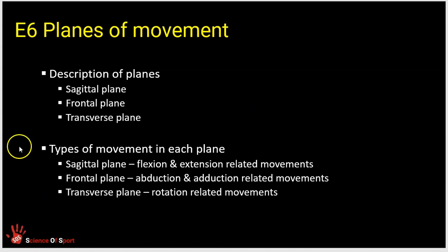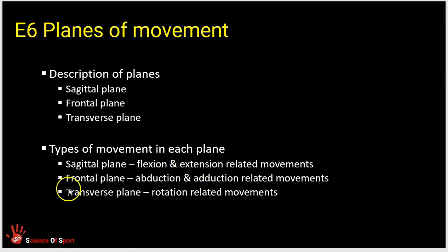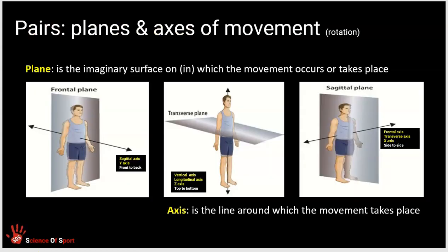Certain types of movement actually happen in certain planes. Within the sagittal plane we have flexion and extension related movements. The frontal plane is abduction and adduction. The transverse plane is rotational movements. A plane is an imaginary surface on which a movement occurs or takes place. Often when you describe plane or actions within a plane, you talk about them being in the plane of movement.